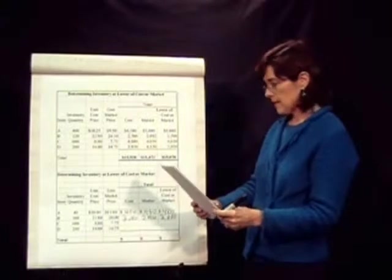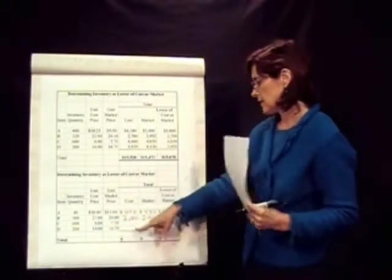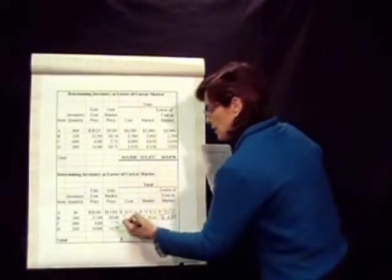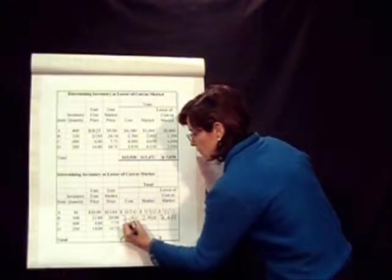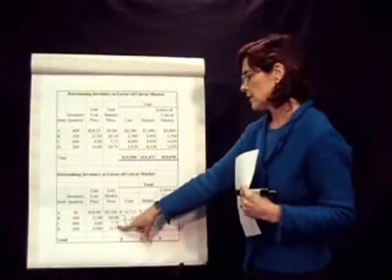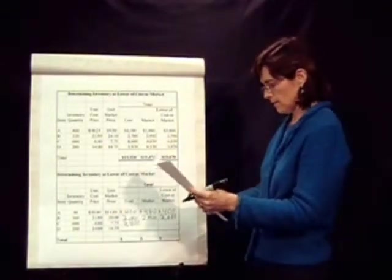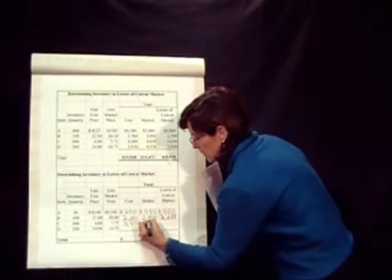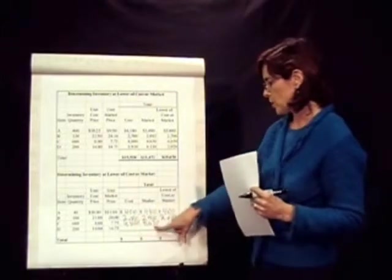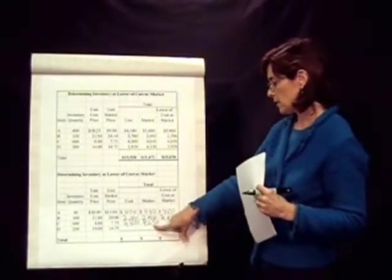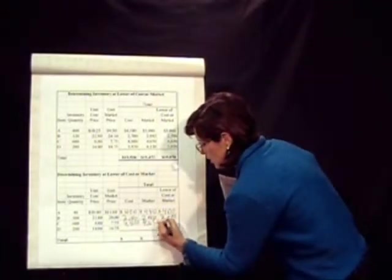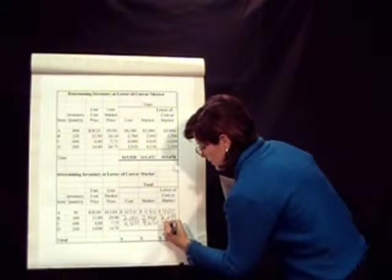Going down to item C, it says we have 600 at $8. 600 at $8 will give us $4,800 for our cost. What about our market here? The market value is $7.75, so 600 times $7.75 gives us $4,650. Which one is lower, the cost or the market? Here it looks like the market value is lower. We lost money by holding on to our inventory, which happens, especially with technology.